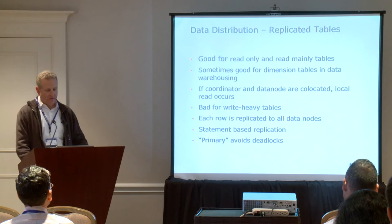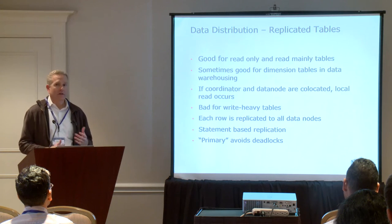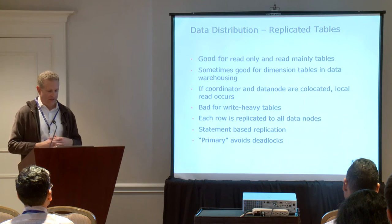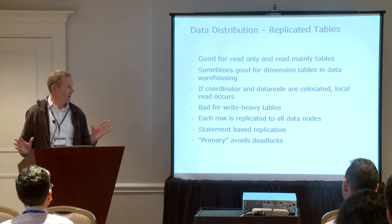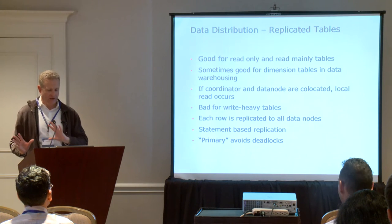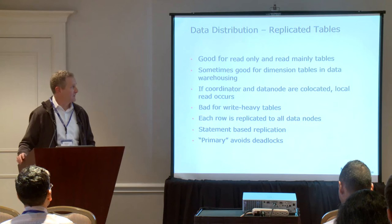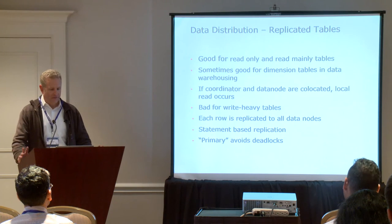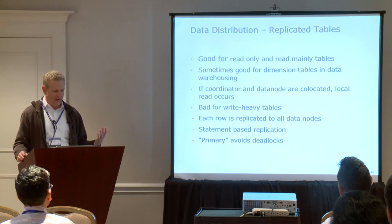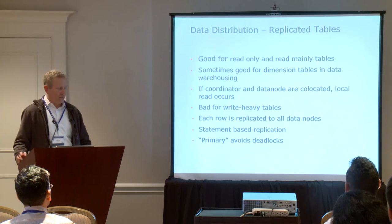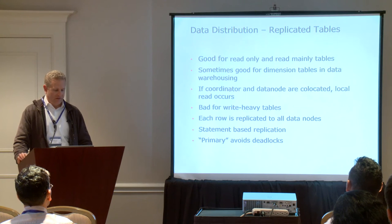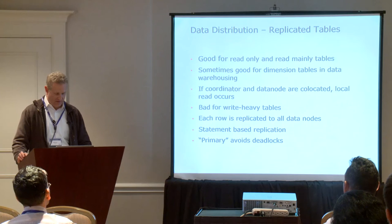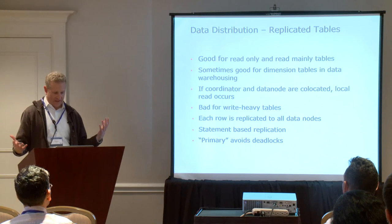In terms of data distribution, there are a couple of strategies. You can choose to have some data completely replicated — an exact replica on all nodes or a subset of nodes. This makes sense for your static data, your lookup data — state codes, things like that. It's good for read-only or read-mainly tables. If you're doing data warehousing, it's good for dimension tables so they can join with larger fact tables.